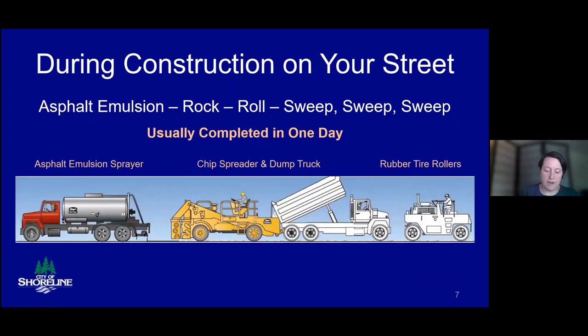The graphic on this slide represents the BST construction train in the order of use during work on a typical street. First comes the asphalt emulsion sprayer, followed very closely by the chip spreader and the dump trucks that supply rock chip aggregate, and finally the rubber tire rollers that roll the rock into the still hot asphalt emulsion, creating the new surface. This is followed by vacuum sweeping to remove loose and unbound aggregate chips.